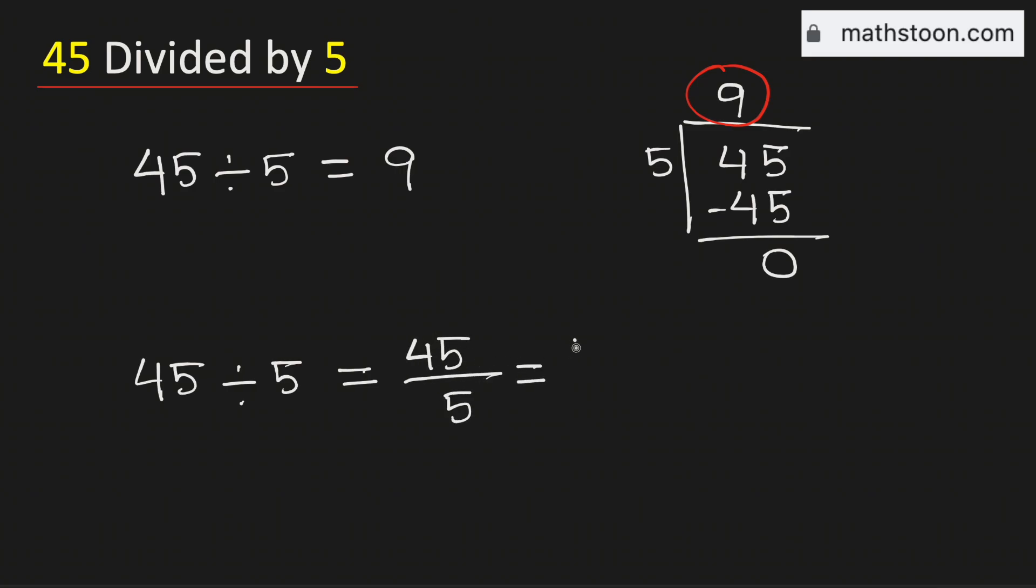In the next step, we will write 45 as 5 times 9 divided by 5.